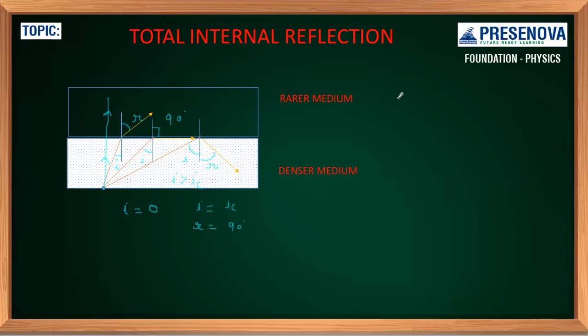So of course we have two conditions involved here. First, the light must travel from denser to rarer medium. And the second being the angle of incidence must be greater than critical angle. Only then total internal reflection will happen.